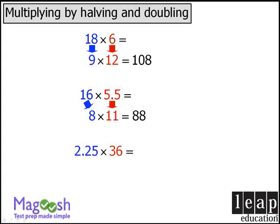One more example. Let's take our 2.25 and double it to get 4.5, and we'll take our 36 and halve it to get 18. Let's apply the technique one more time — we'll take our 4.5 and double it, and we'll take our 18 and halve it to get 9. So we see our product here is 81.